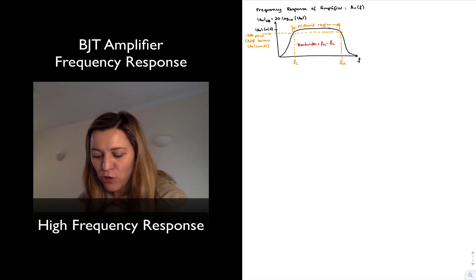I have redrawn the Bode plot for the magnitude response of an amplifier, where we can see again that there is a midband region over which the magnitude of the amplifier gain remains approximately constant.